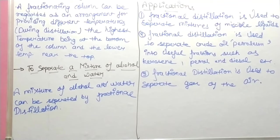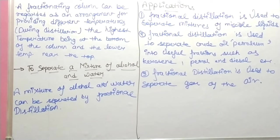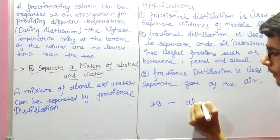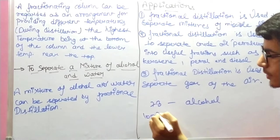When the temperature at the top of the fractionating column reaches 78 degrees Celsius, the vapor of alcohol will pass through the condenser and be collected in a separate beaker. The boiling point of alcohol is 78 degrees Celsius and water is 100 degrees Celsius. So at 78°C alcohol vaporizes first, and at 100°C water vaporizes, allowing us to separate the two liquids.